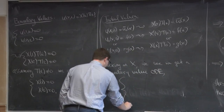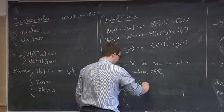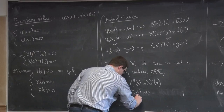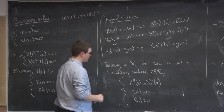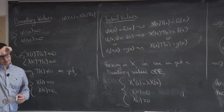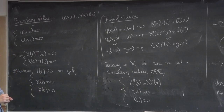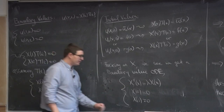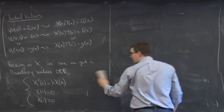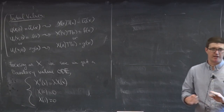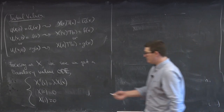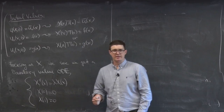So the boundary value ODE in x is: X''(x) equals lambda X(x), with X(0) equals zero and X(1) equals zero. We're back to studying ordinary differential equations. We have to write down a general solution — we don't know what lambda is right now. By specifying conditions at the boundary, it turns out those conditions tell us what lambdas can be, which is a kind of magical fact.